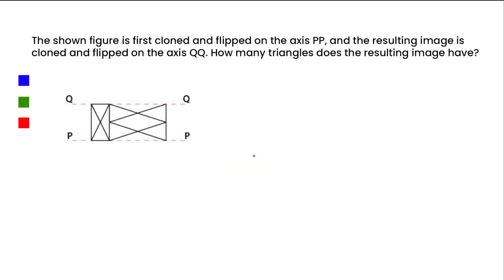This question is from the PSLE 2021 examination. The shown figure is first cloned and flipped on the axis PP, and the resultant image is cloned and flipped on the axis QQ. How many triangles does the resulting image have? Given the object, which has axes PQ — this is our starting object.